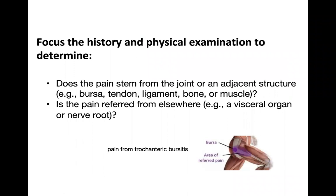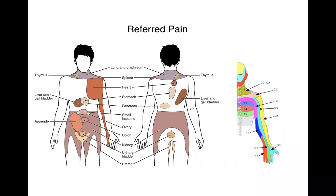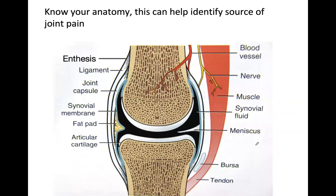You want to decide if the pain is from a bursa, a tendon, a ligament, or muscle, and whether it's referred from another joint. There is a trochanteric bursa over the hip — a lot of times people come in complaining of hip pain but it's really the bursa. And the most common referred pain we see is in the neck: people come in complaining of shoulder pain, you examine the shoulder and it's completely normal, but the pain is actually coming from their neck, sometimes with numbness or tingling.